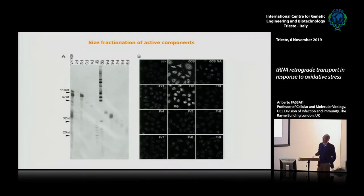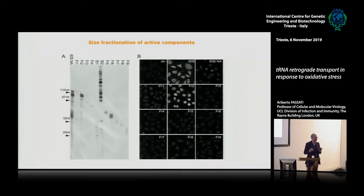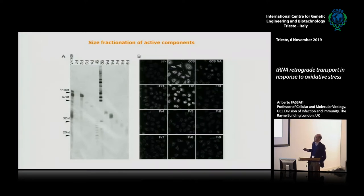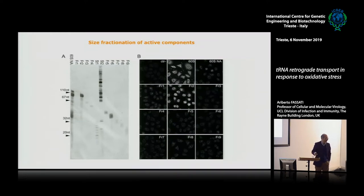We ran a denaturing long gel and could see several bands ranging in size from about 110 nucleotides to about 20 nucleotides. To identify the active component, we cut out each band one by one, put them at the same concentration, and tested them in the import assay. Fraction two was the active one — not because it was most abundant, but because it was normalized for concentration and was genuinely the active component.